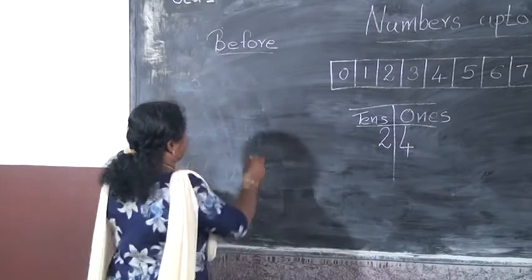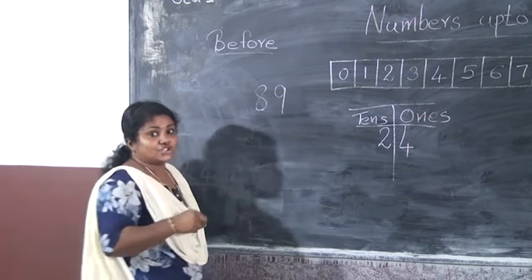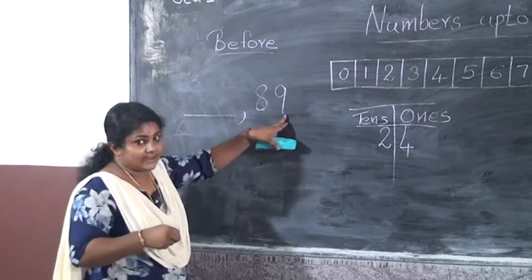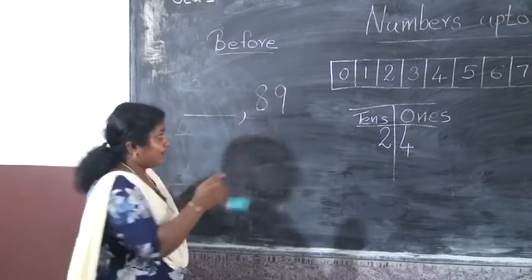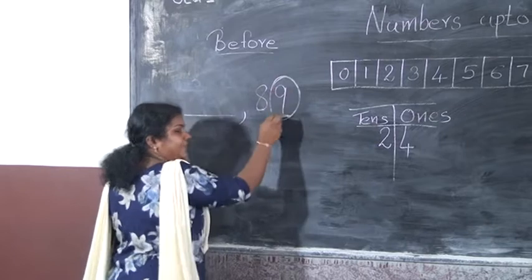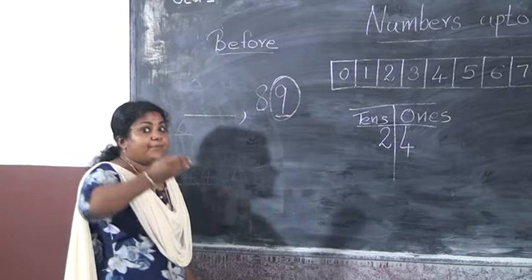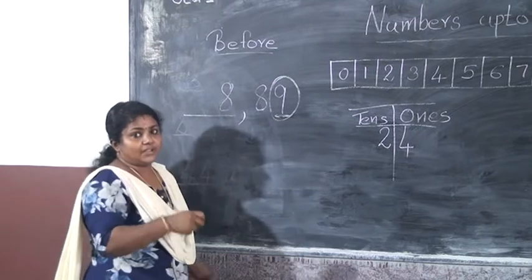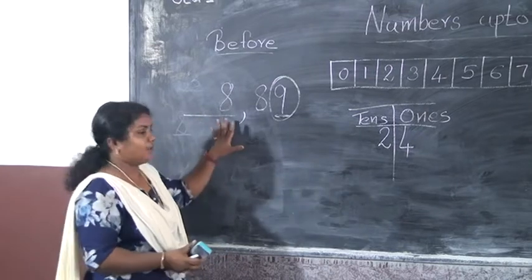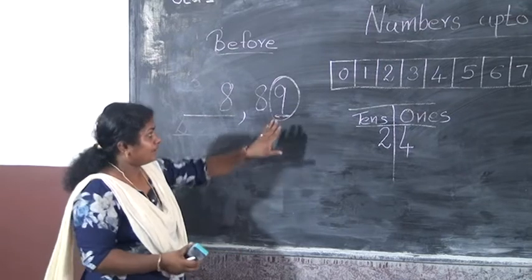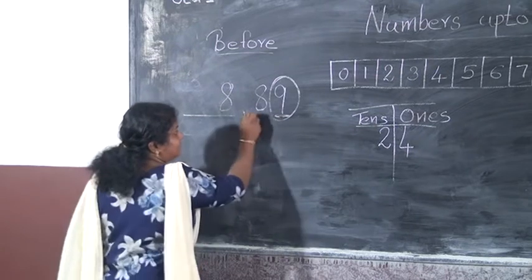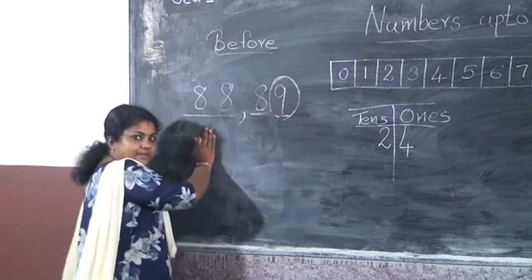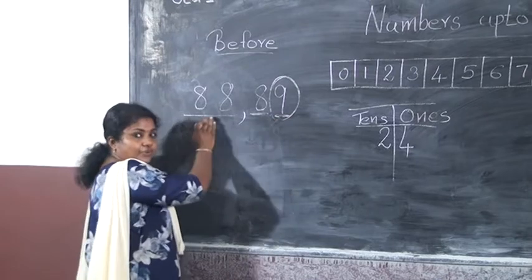And the next number: 89. Which is the before number of 89? We have to first look the number in the 1s place — it is 9. And we have to write the before number of 9, that is 8. And in the 10s place, it is 8, so we write 8 there too. So 89's before number is 88.